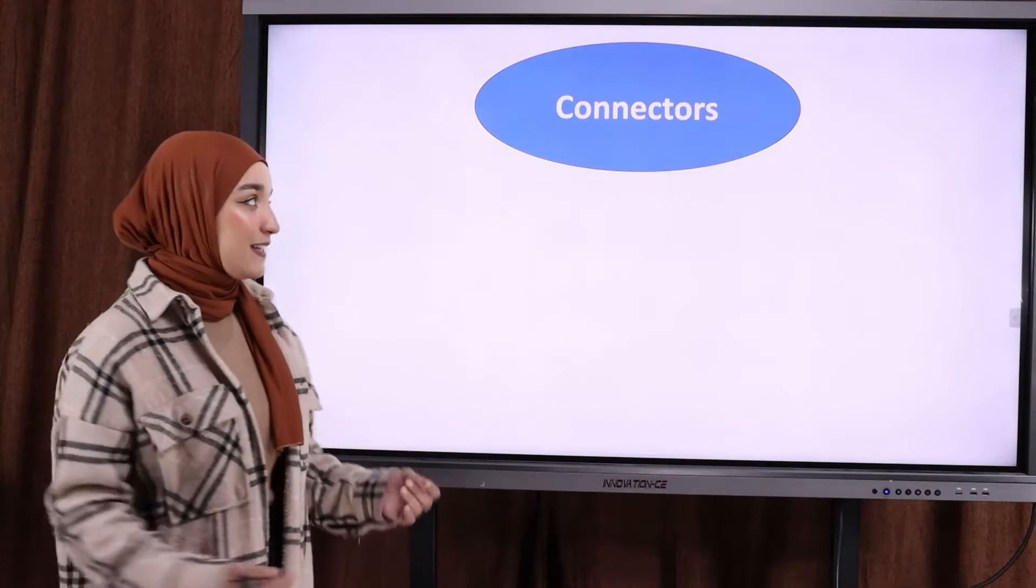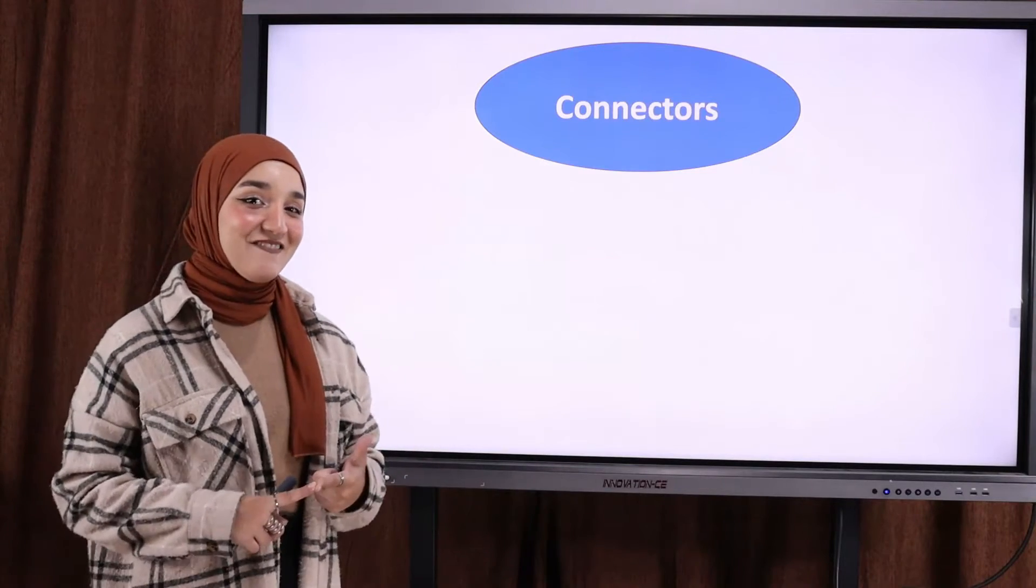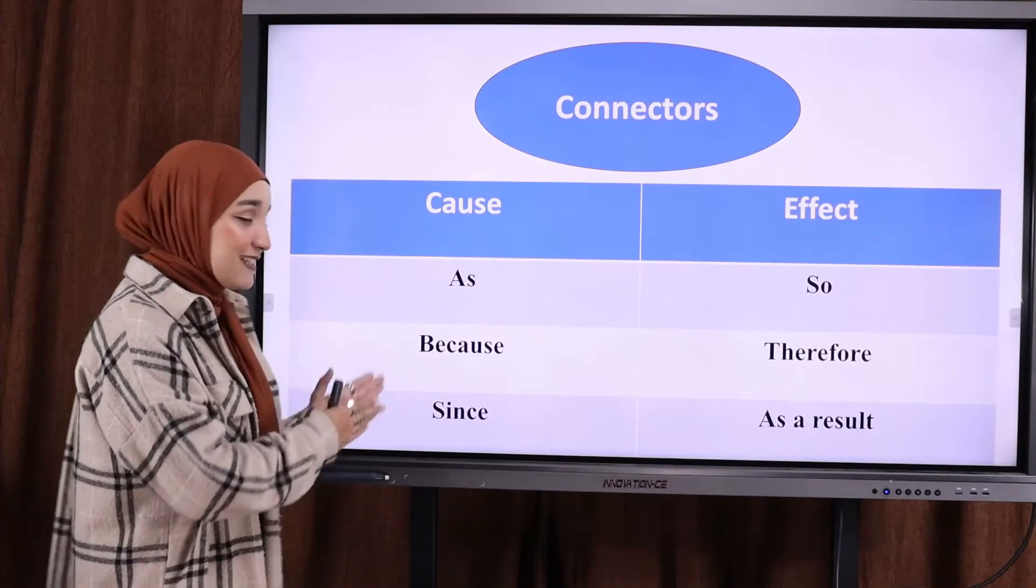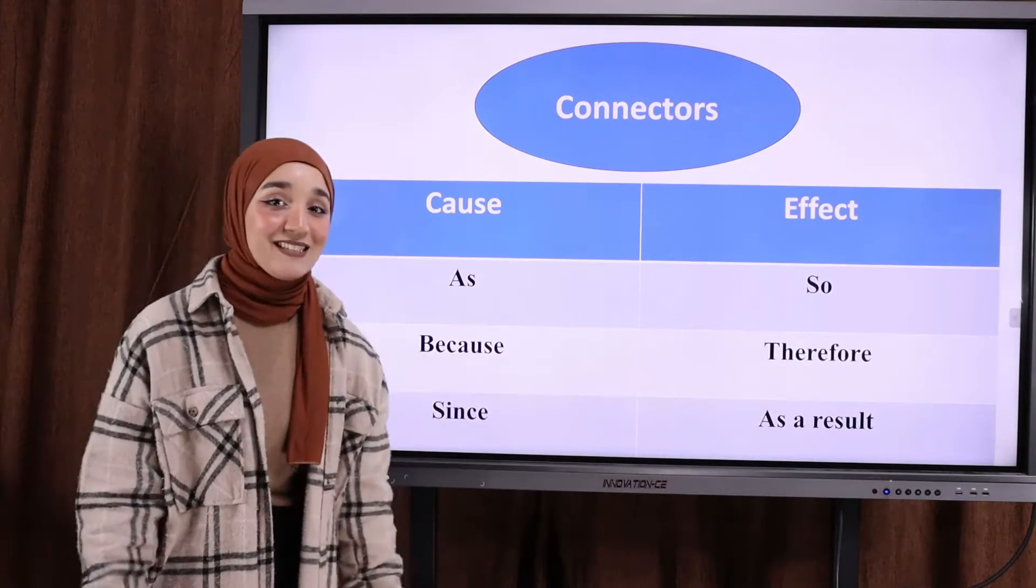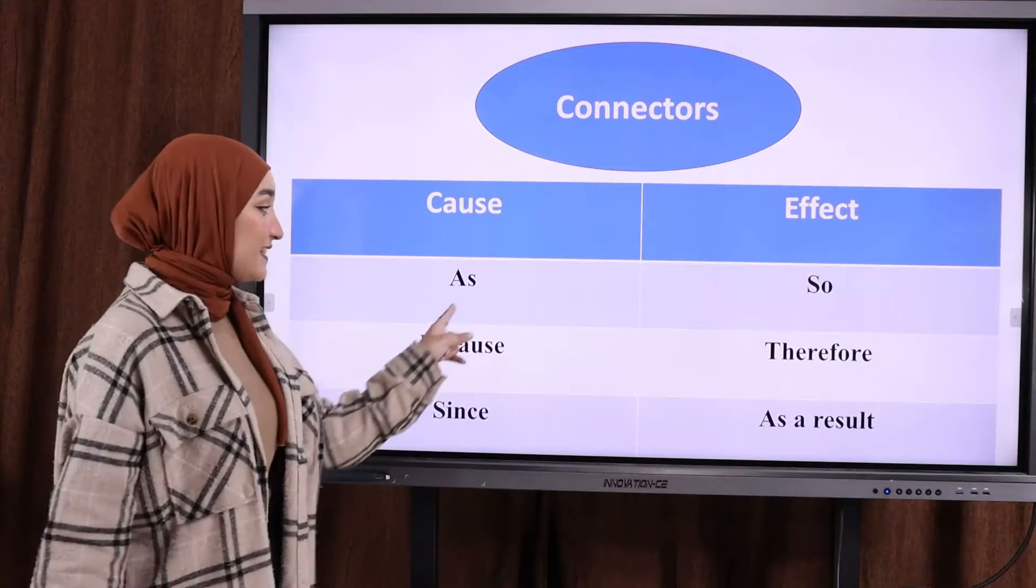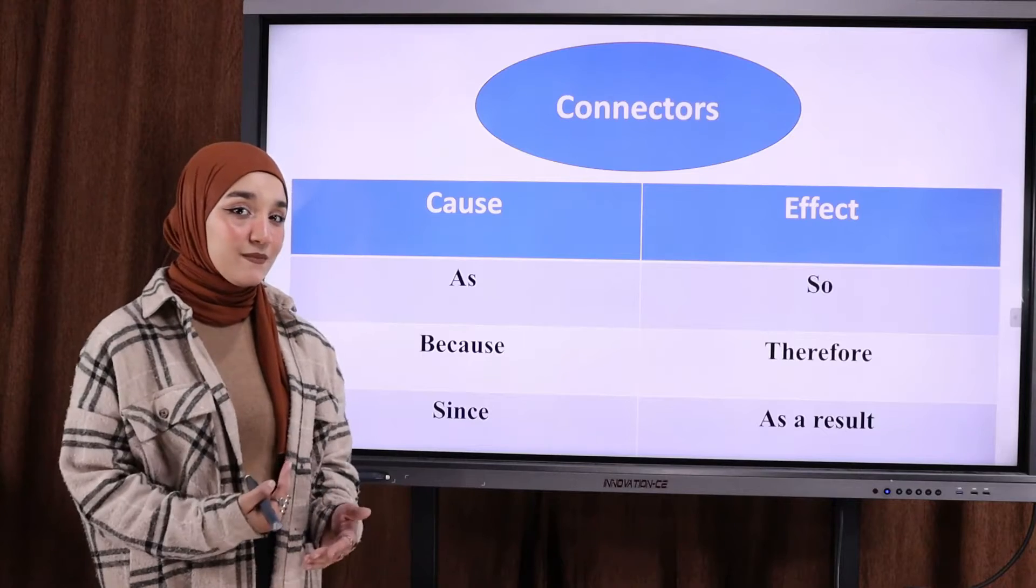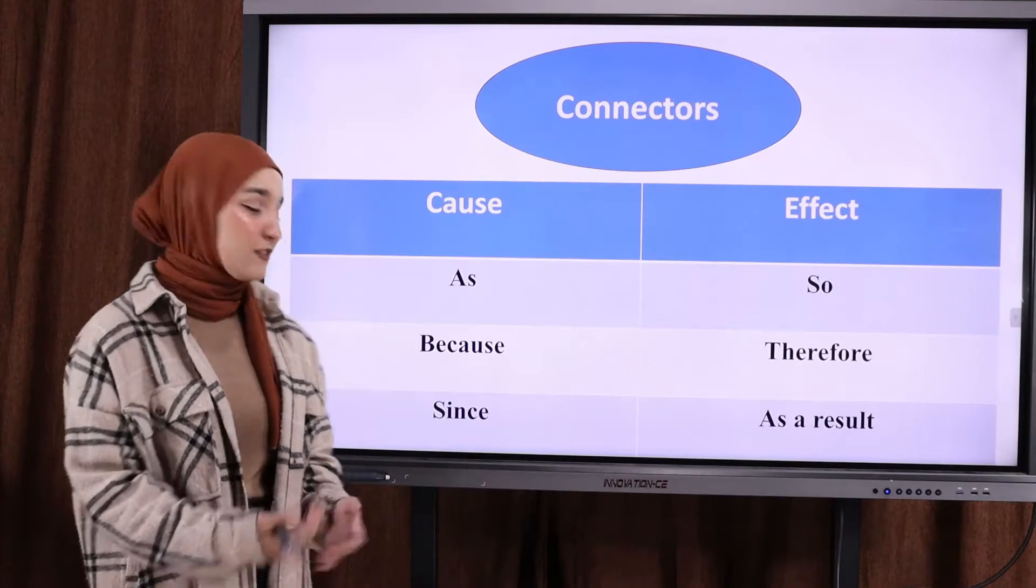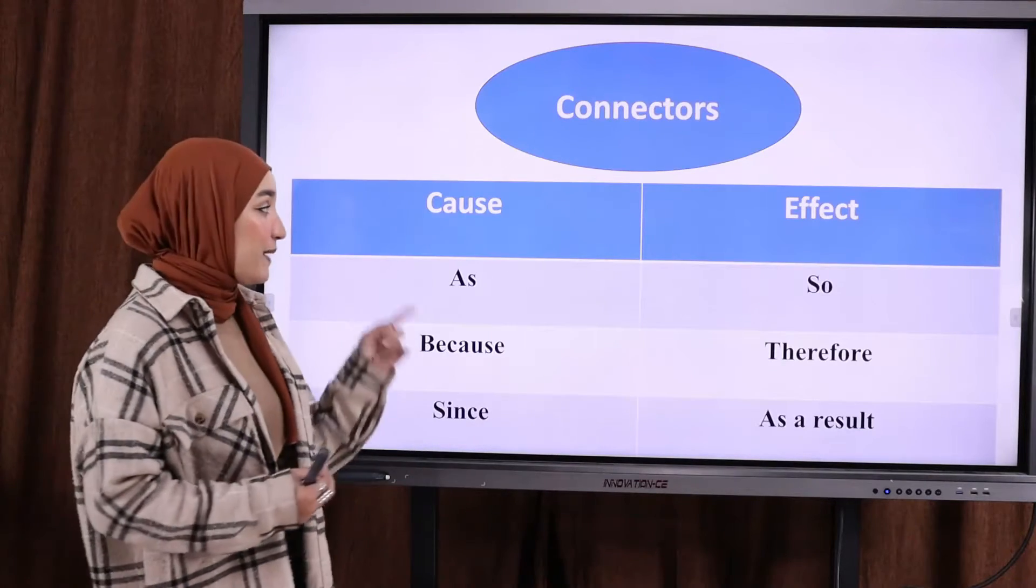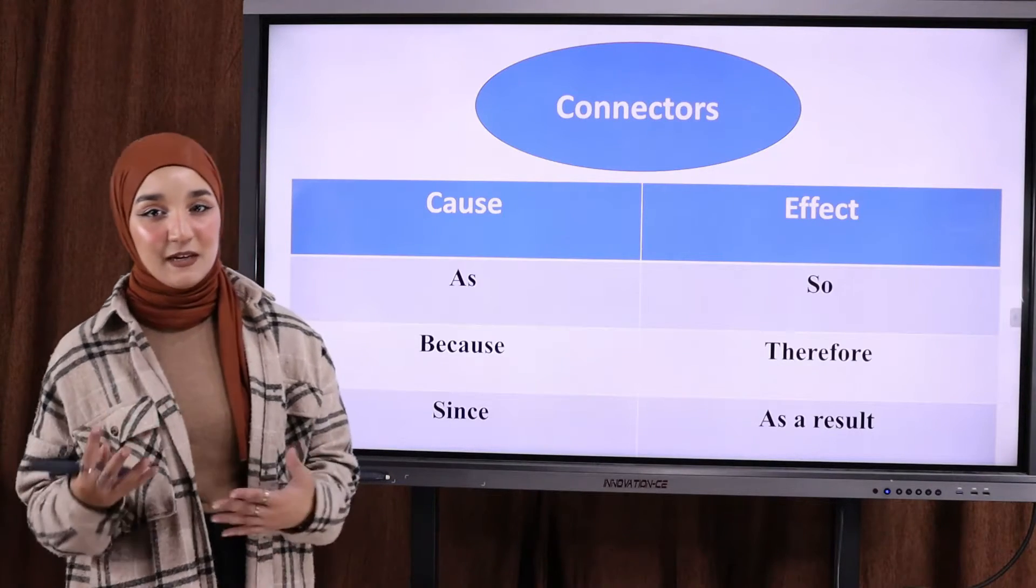What are those connectors? Let's take a look at the connectors that we use. Today we are taking a look at six connectors. Three to express cause and three to express effect. The first connector is as. The second one, because. Sometimes you hear because. And since. We use them to talk about a cause. They have a similar meaning.